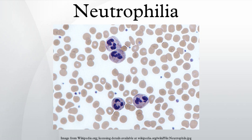A neutrophilia might also be the result of a malignancy. Chronic myelogenous leukemia is a disease where the blood cells proliferate out of control; these cells may be neutrophils. Neutrophilia can also be caused by appendicitis and splenectomy.